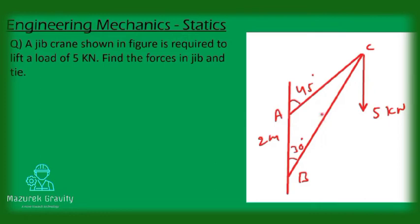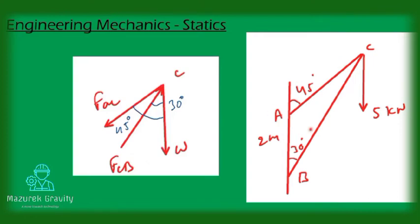Today's problem is a jib crane shown in figure is required to lift a load of 5 kN. Find the forces in jib and tie. The given jib crane is shown in this figure. There is a downward load of 5 kN acting like this.